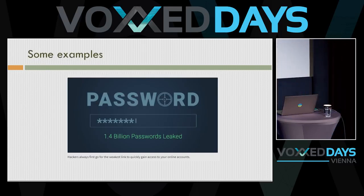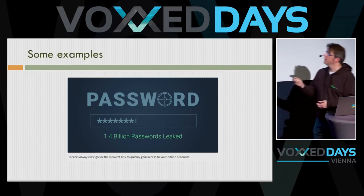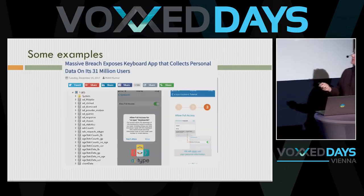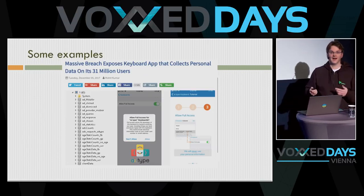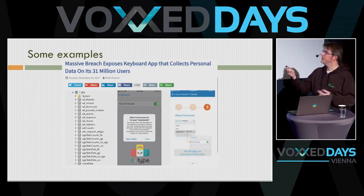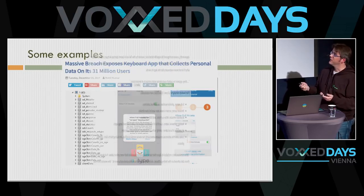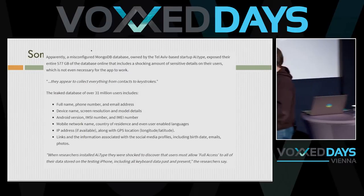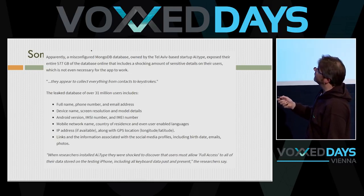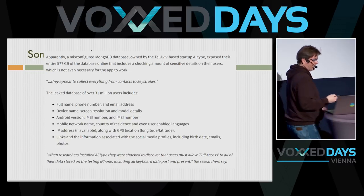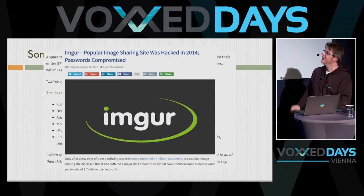The first example is a website that leaked 1.4 billion passwords. Another one I found was a keyboard app for iOS — it had full permissions to work, but security researchers found a MongoDB database on the internet containing data for all users of that app: swiping, typing, emails, credit cards — they had all that information.